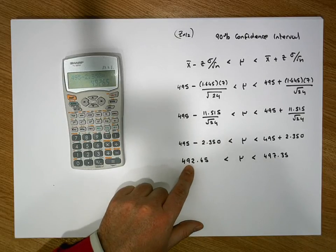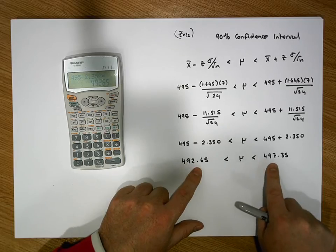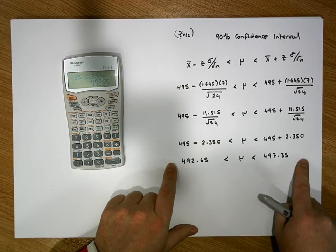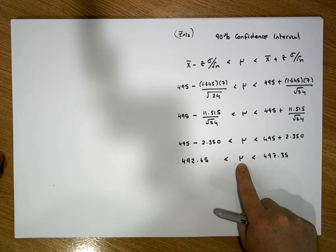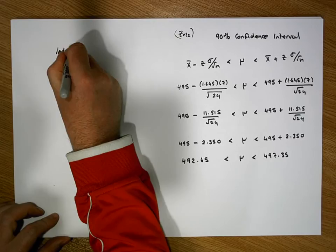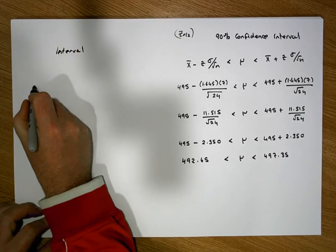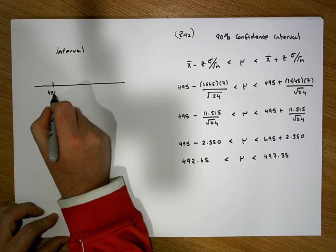But let's just keep in mind that we could be wrong. The population mean might actually fall outside of these particular bounds, but that should only happen approximately 10% of the time. So from an interval perspective, from the interval, what we're saying is this, is that we have 492.65,